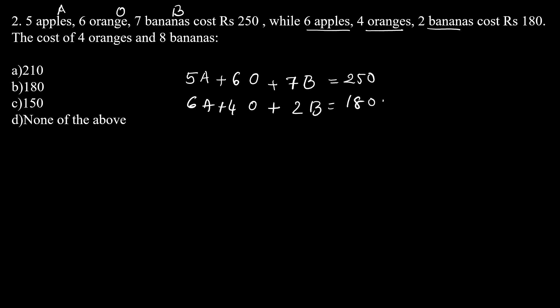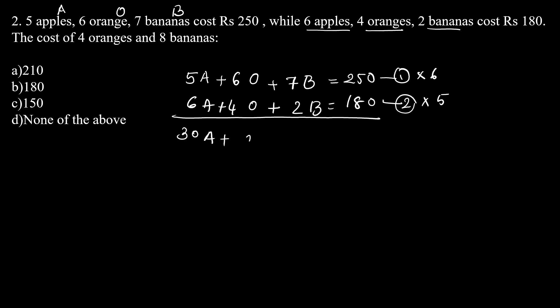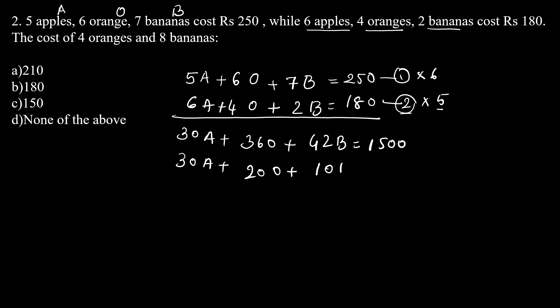Now, we have to solve these two equations. We will multiply equation 1 by 6 and equation 2 by 5. So we get: 30A plus 36O plus 42B equals 1500 (equation 3), and 30A plus 20O plus 10B equals 900 (equation 4).